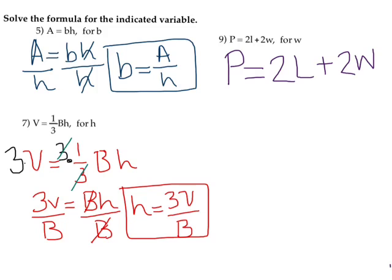Well, I notice right here that I'm adding 2L to 2W. So, what I need to do is I need to account for this, and I need to subtract the 2L from both sides. And it cancels.